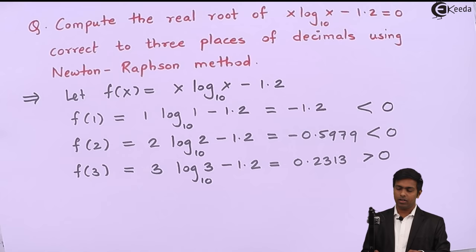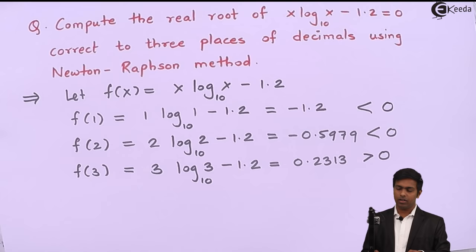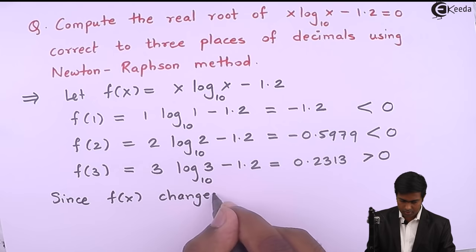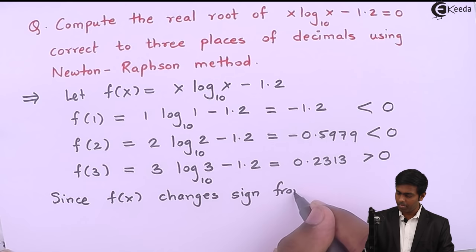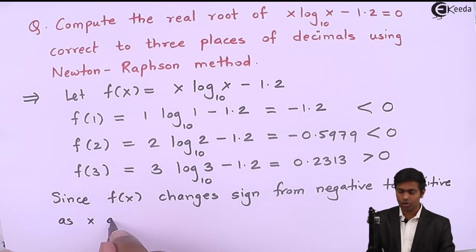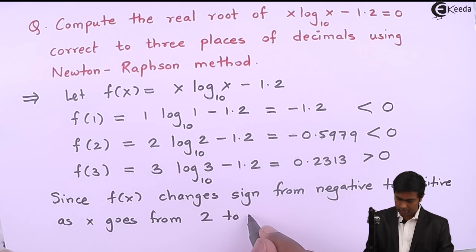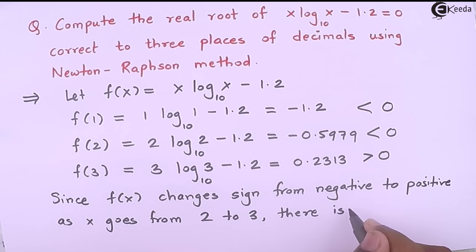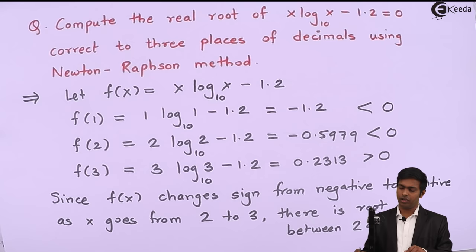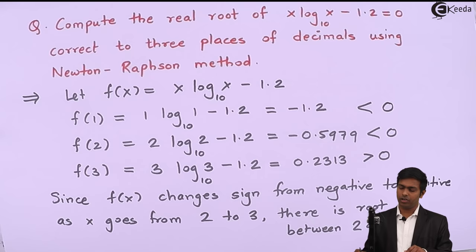We can see that f(x) changes sign from negative to positive as x goes from 2 to 3, so there is a root between 2 and 3. Our root lies between 2 and 3, and now we will use the Newton-Raphson method to get that root.